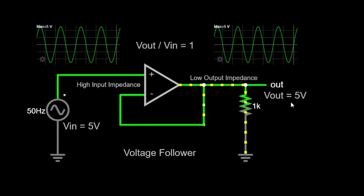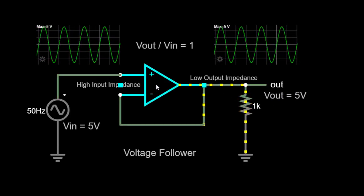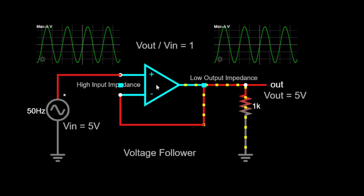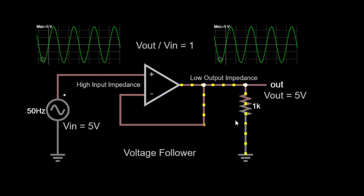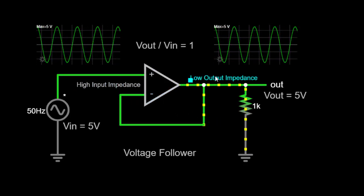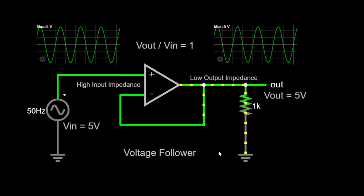The circuit consists of an operational amplifier, or op-amp, which is the key component of the voltage follower. The op-amp used in this circuit has a high input impedance and a low output impedance, making it suitable for this application.